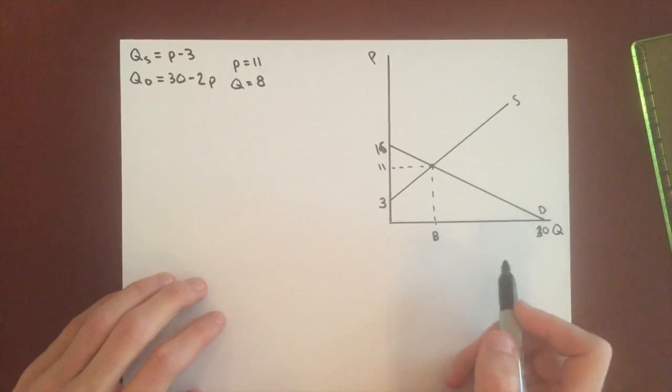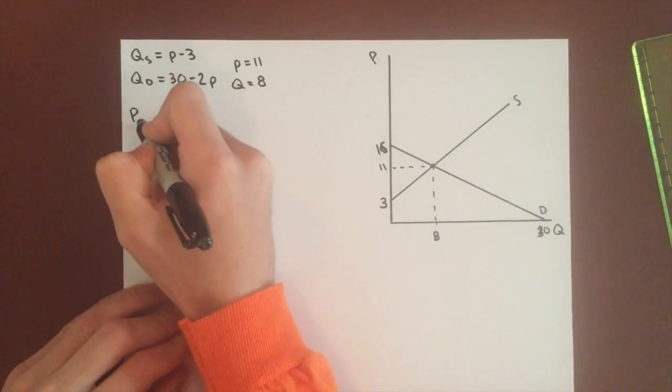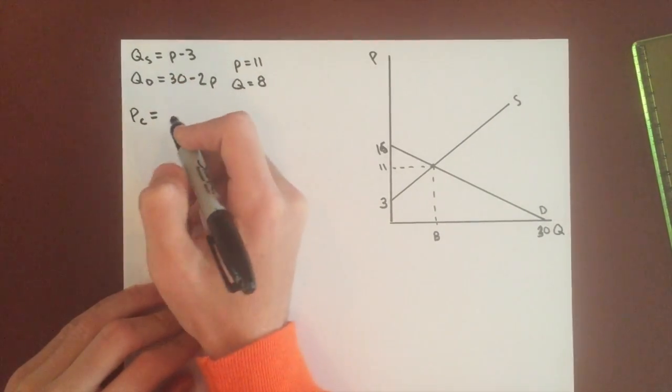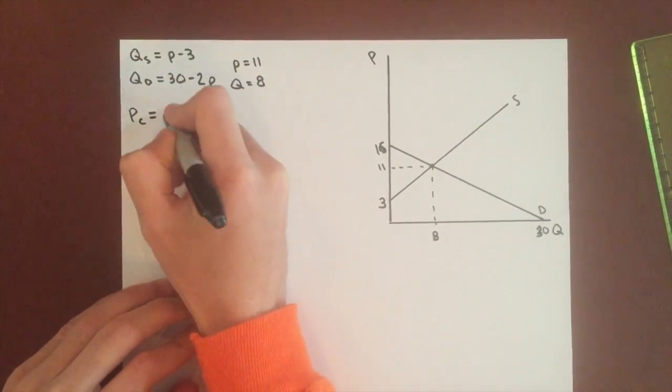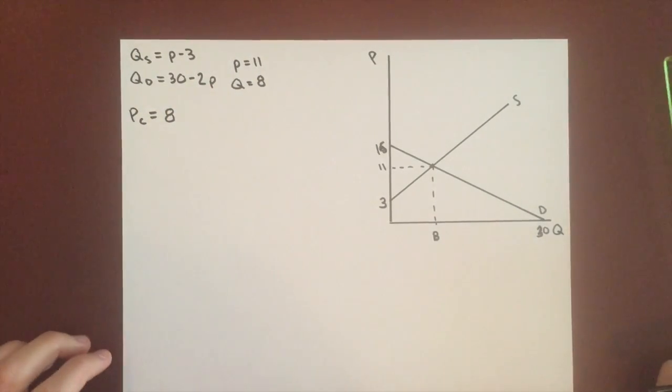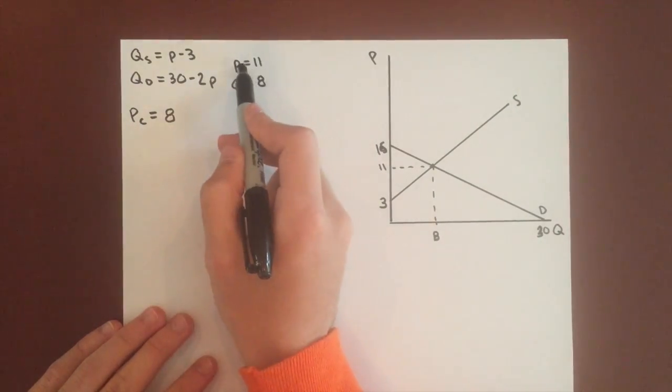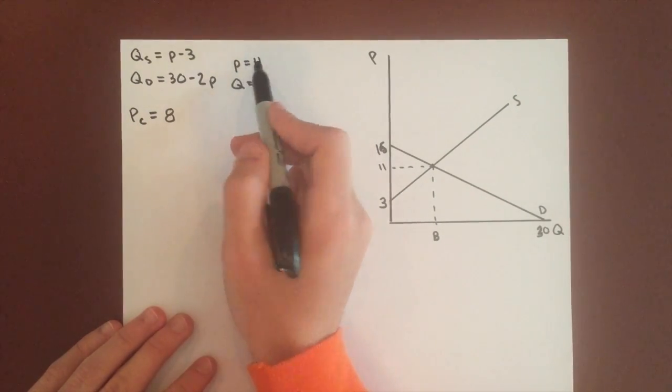So let's say we institute a price ceiling equal to $8. So this will have an effect on the price and quantity since it is less than the equilibrium price of 11.